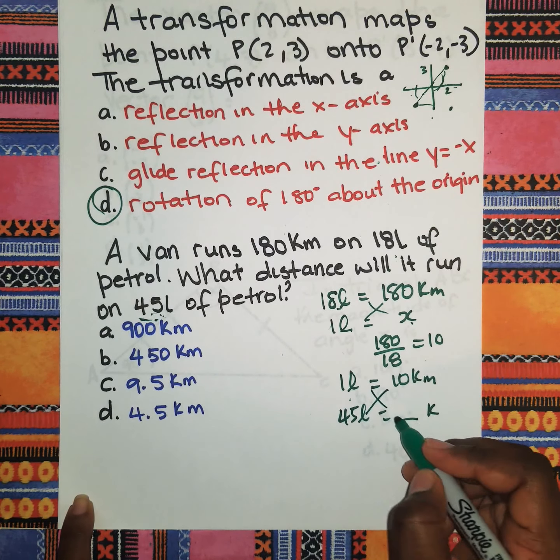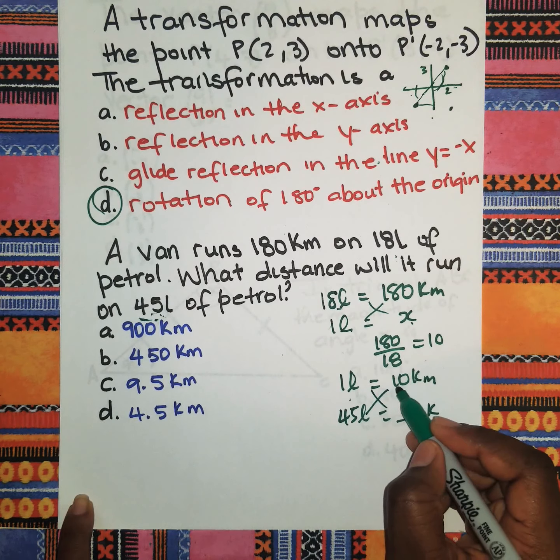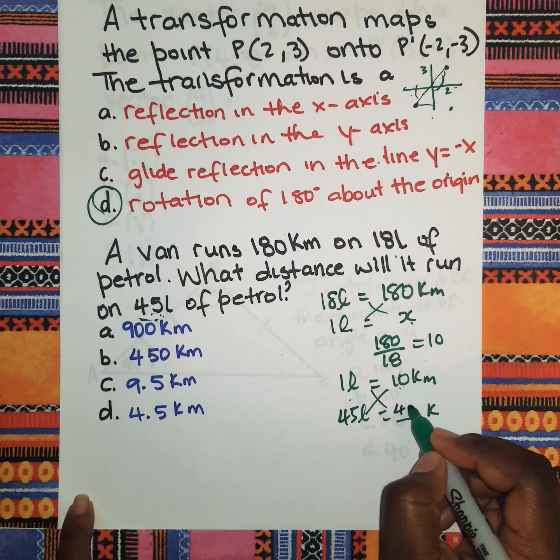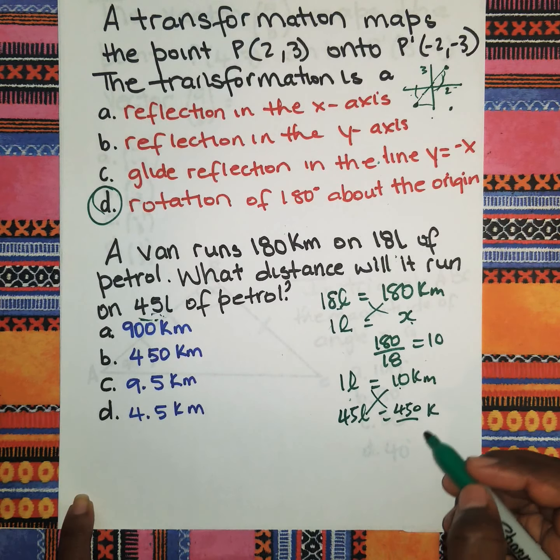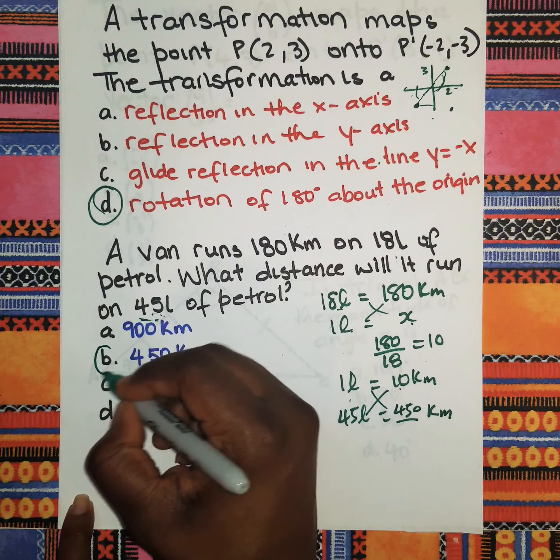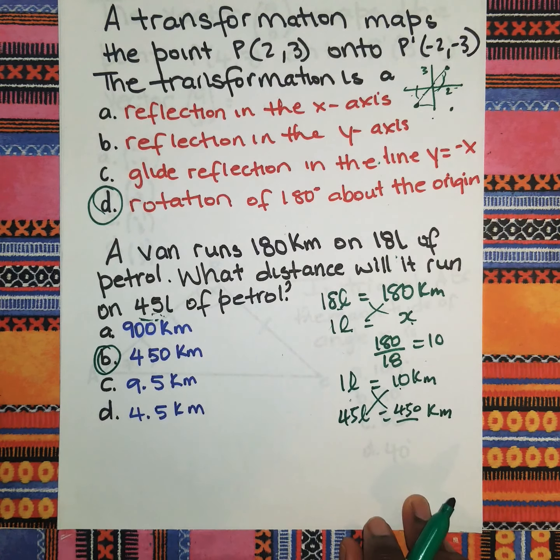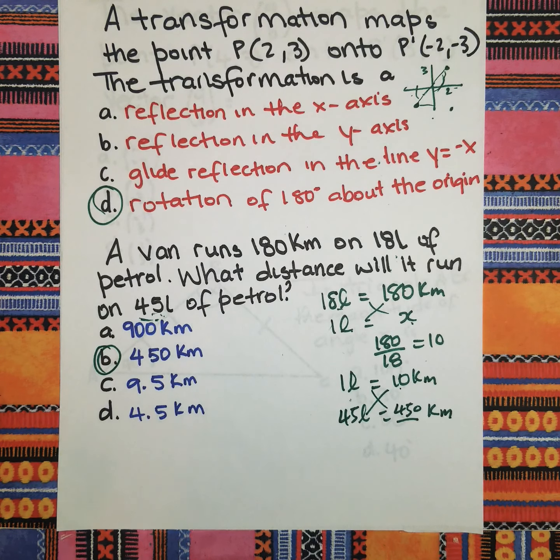So for 45 liters of petrol, how many kilometers would this person go? Again, you do a cross multiplication: 45 times 10 will give you 450 kilometers. If you don't understand this question, please leave me a comment in the comment section below and I'll be happy to assist you.